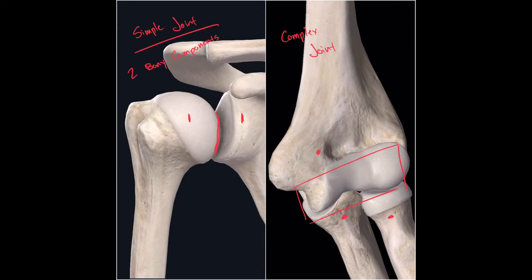Another way you can call it is a composite joint, and it's defined as a joint made up of three or more skeletal structures.